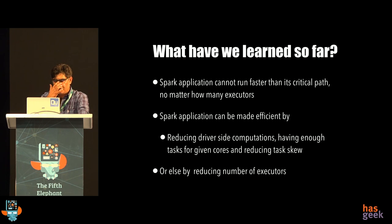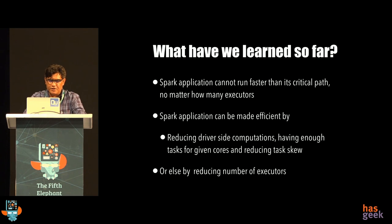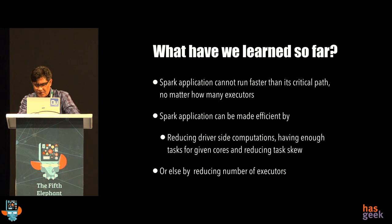What have we learned so far? A Spark application cannot run faster than its critical path, no matter how many executors. The way to make a Spark application efficient is by looking at three areas: reduce driver-side computation, have enough tasks for all the cores, and reduce task skew. If you cannot do any of them, one way to reduce wastage is by reducing the number of executors — there is a lot more packing of tasks and you'll probably get much more bang for the buck. That concludes the theory behind Spark Lens.